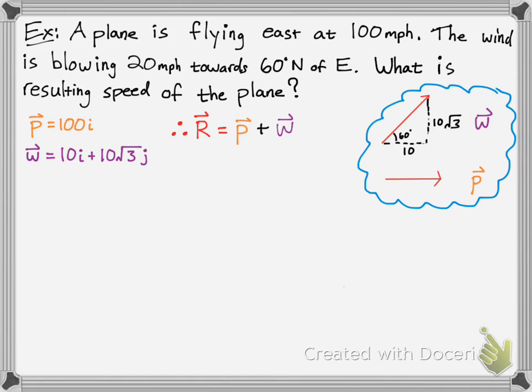How we figured out the 20 miles an hour 60 degrees north of east: you simply draw that triangle with that angle 60 degrees, and you know that the hypotenuse is 20. Using your knowledge of 30, 60, 90 triangles, you can figure out that the sides are 10 and 10 radical 3, and then you can make your vector W for wind to be 10i plus 10 radical 3j.